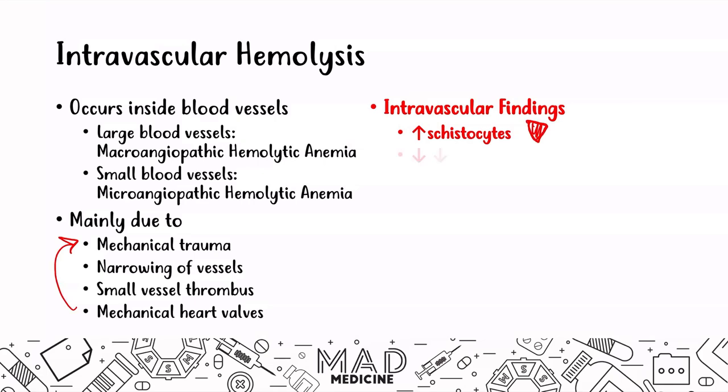You're also going to see a significant decrease in haptoglobin. When you lyse your red blood cells, you have hemoglobin floating around. Because you have intravascular hemolysis occurring, you're going to have a lot of hemoglobin which will bind to haptoglobin. That binding is going to deplete your haptoglobin concentration in the serum, and therefore you will see a significant decrease in haptoglobin. You are also going to see an increase in unconjugated bilirubin.